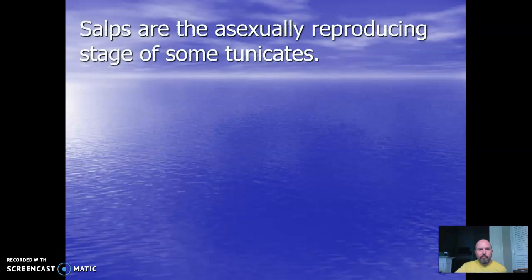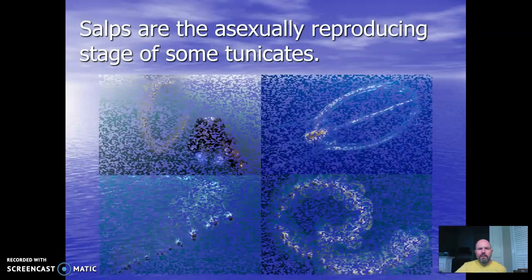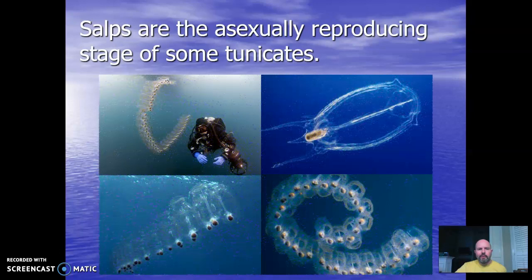Salps are the asexually reproducing stage of some tunicates. These pictures show organisms that look nothing like us, yet they are in the same phylum. It's strange to think that we are more closely related to these organisms than to any other group we've covered in this class.